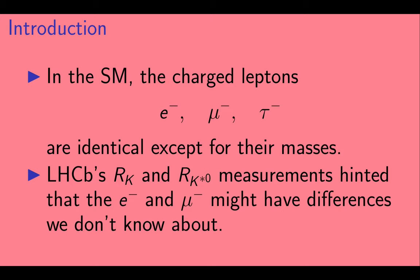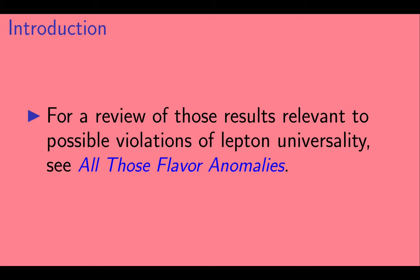LHCb's RK and RK star measurements hinted that the electron and muon might have differences that we don't know about. For a review of these results relevant to possible violations of lepton universality, you can check out the video, All Those Flavor Anomalies, available on this channel.